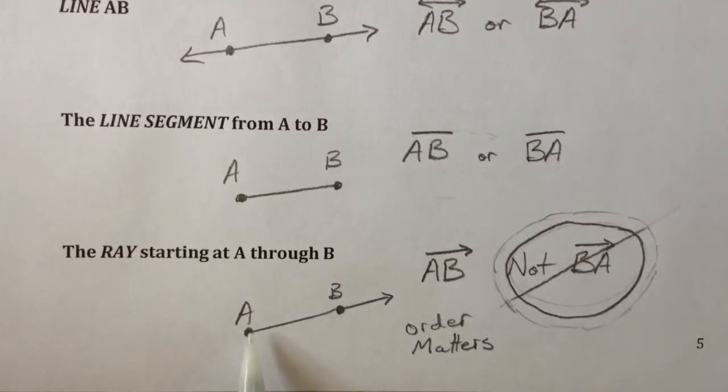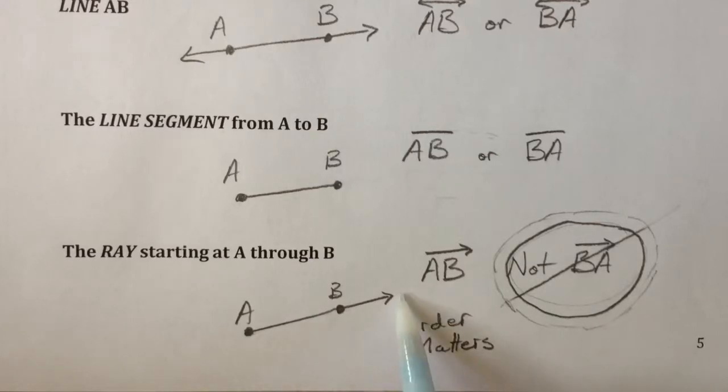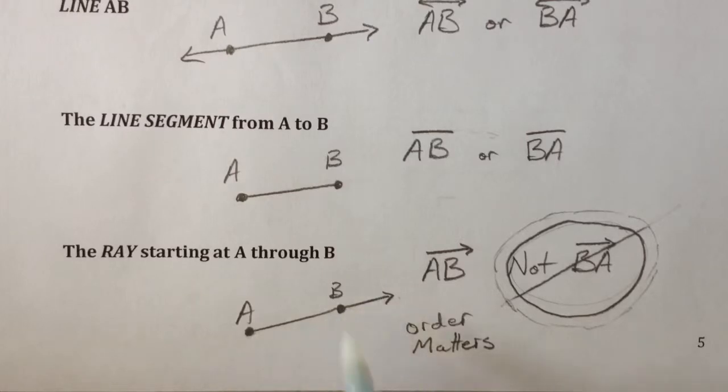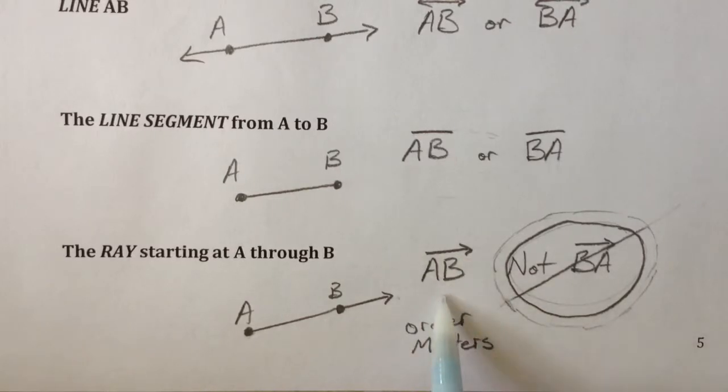And last but not least, the ray. A ray has a starting point, and then one side of it doesn't end. So it starts just like rays from our sun start at the sun and then keep on going and not going. And when you name a ray, you start it with the starting point, A, and then which direction it's going. It's going through B. So you would never name this ray BA, because it's starting at A and going towards B. So you always want to name it like this. So the order matters when you're naming a ray.